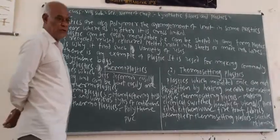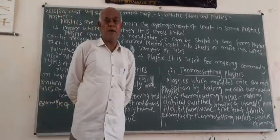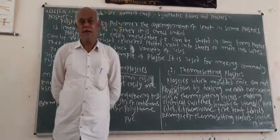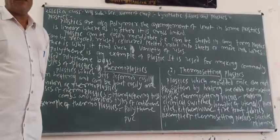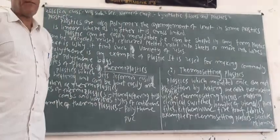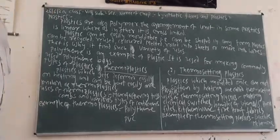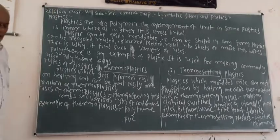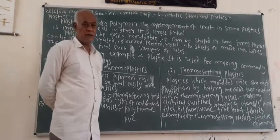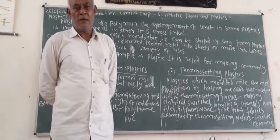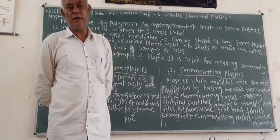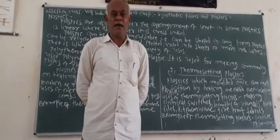The pouches of milk and buttermilk are also made of polythene. Now, what are the types of plastic? Plastic can be classified into two types: thermoplastic and thermosetting plastic.